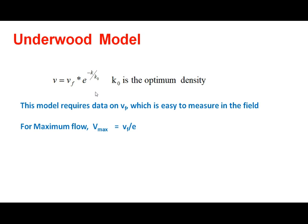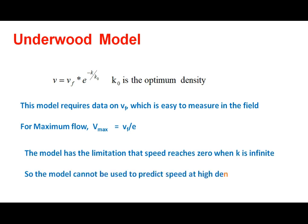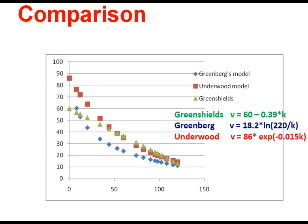The Underwood model uses free flow speed, which is easy to measure in the field, and uses optimum density rather than jam density. Analysis of this equation shows that at maximum flow, speed equals V_F / e. However, the model has the limitation that speed only reaches zero when K is infinite, so it cannot be used to predict speed at high density.